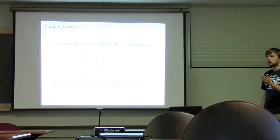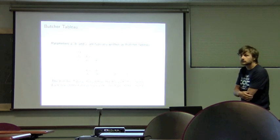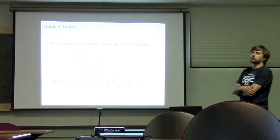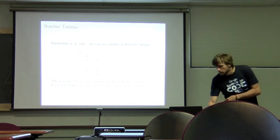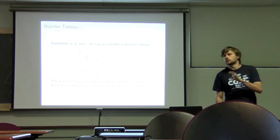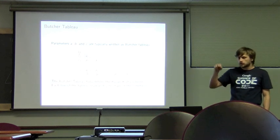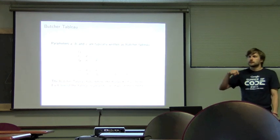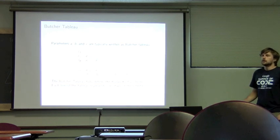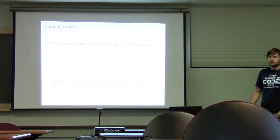[Audience: Do you have to recalculate all the F sub i intermediate values for every step?] No, you should store them. You get F1, then in the next line you get F2 by using F1, then F3 using F1 and F2. The F values do depend on your function, so they vary with each time step — but within a single Runge-Kutta step you compute them sequentially and reuse them.